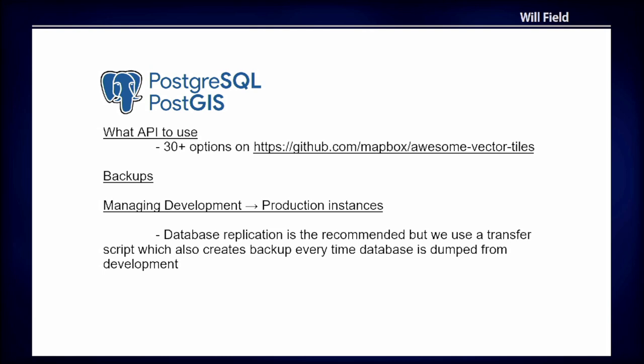One of the challenges with adapting to Postgres is that there are so many ways to serve vector tiles from PostGIS. There is the ST_AsMVT query that selects the shape, but then how do you expose that through an API? There are lots of options. Picking one took a lot of research and poking around and seeing what worked and didn't work.